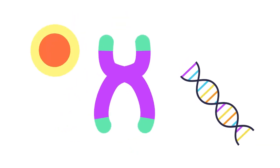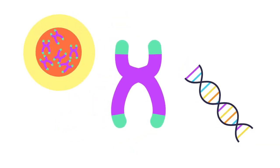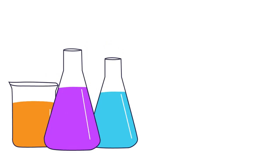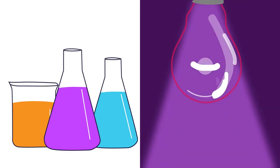Any change in the structure or the amount of DNA of an organism is called a mutation. Mutations are caused by mutagenic agents like some chemicals or ultraviolet light, for example.